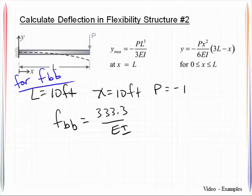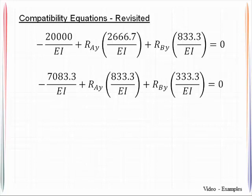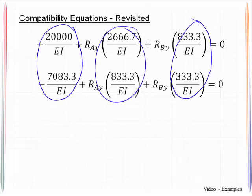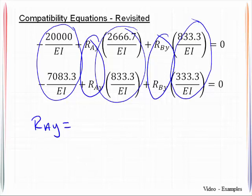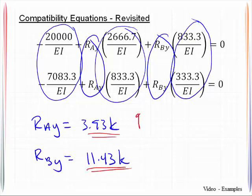I am then prepared to plug those in to the two compatibility equations. You'll notice where I've got the deltas, and then the flexibility coefficients present in there. So you've got two equations, and here are the two unknowns, RAY and RBY. Use whatever tools you have available to you to compute these. We find that RAY is 3.93 kips, and RBY is equal to 11.43 kips. Both of those come out to be positive, which means that they are acting in the up direction.